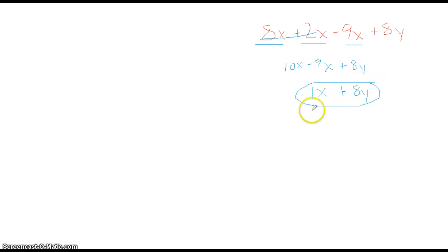A lot of times we don't write the 1, so this would also be a great way to write the answer. It's actually the preferred way. But yeah, just combine the like terms, add the numbers up. 8 plus 2 is 10 of them, minus 9 leaves me with 1x and 8y.